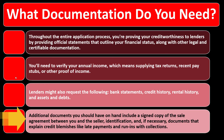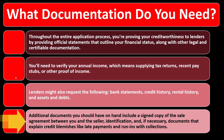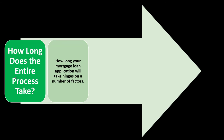Additional documentation you should have on hand includes a signed copy of the sales agreement between you and the seller, identification, and if necessary, documents that explain credit blemishes like late payments and run-ins with collections. If you have any credit issues, you want to justify or explain your side of the story.